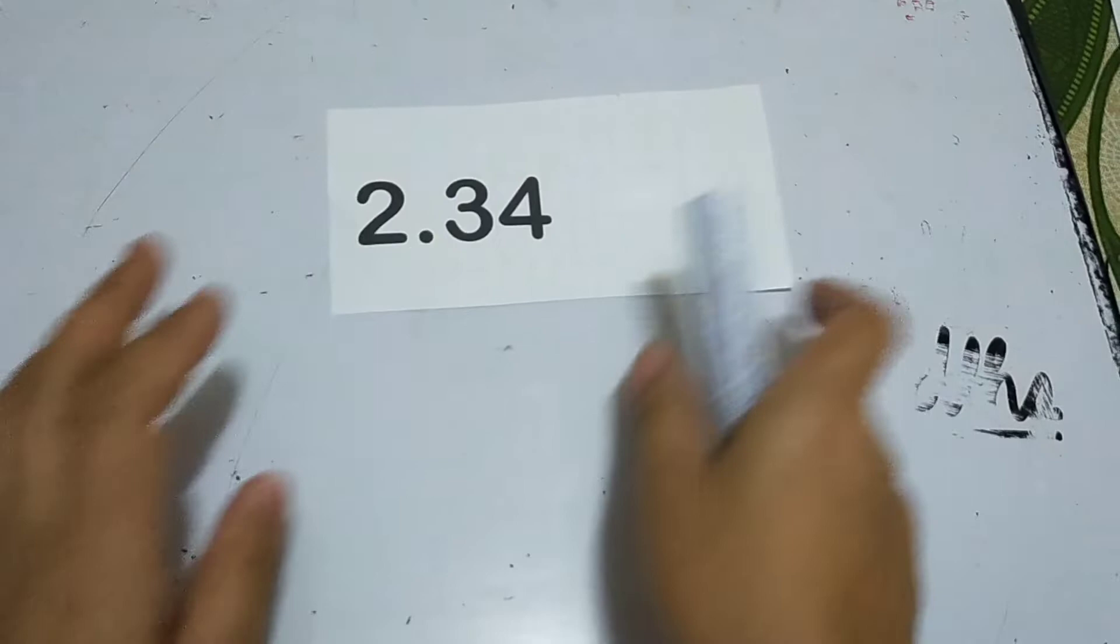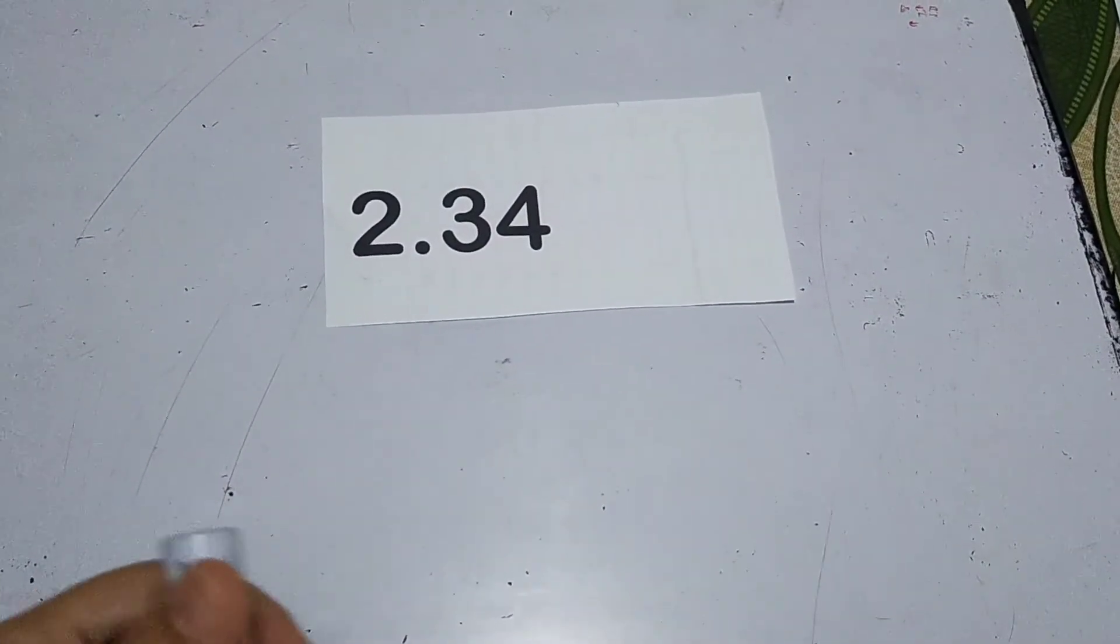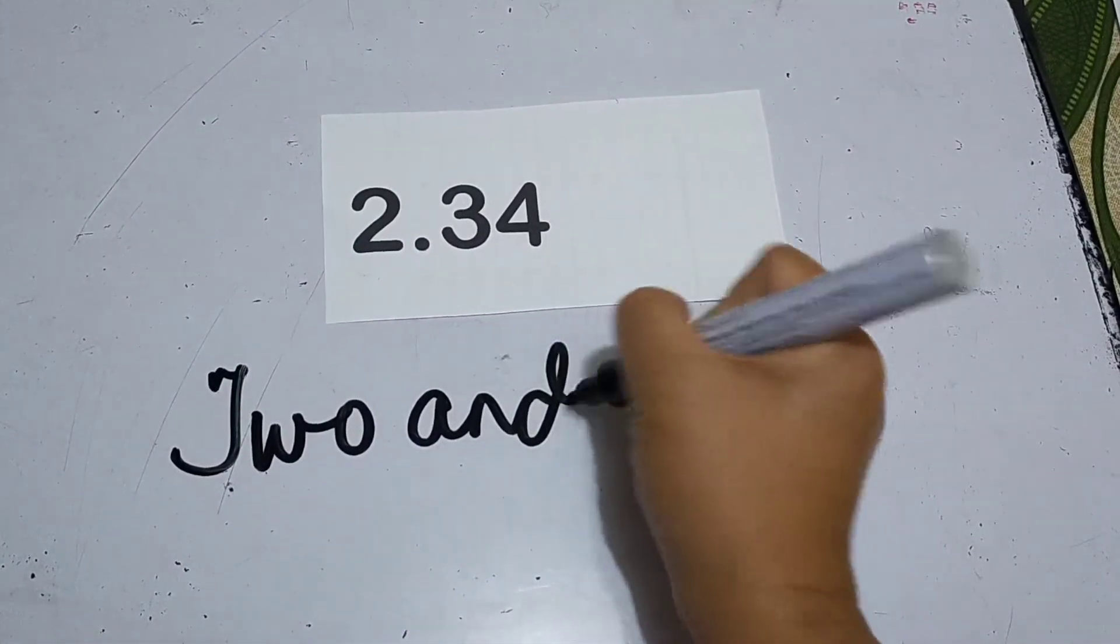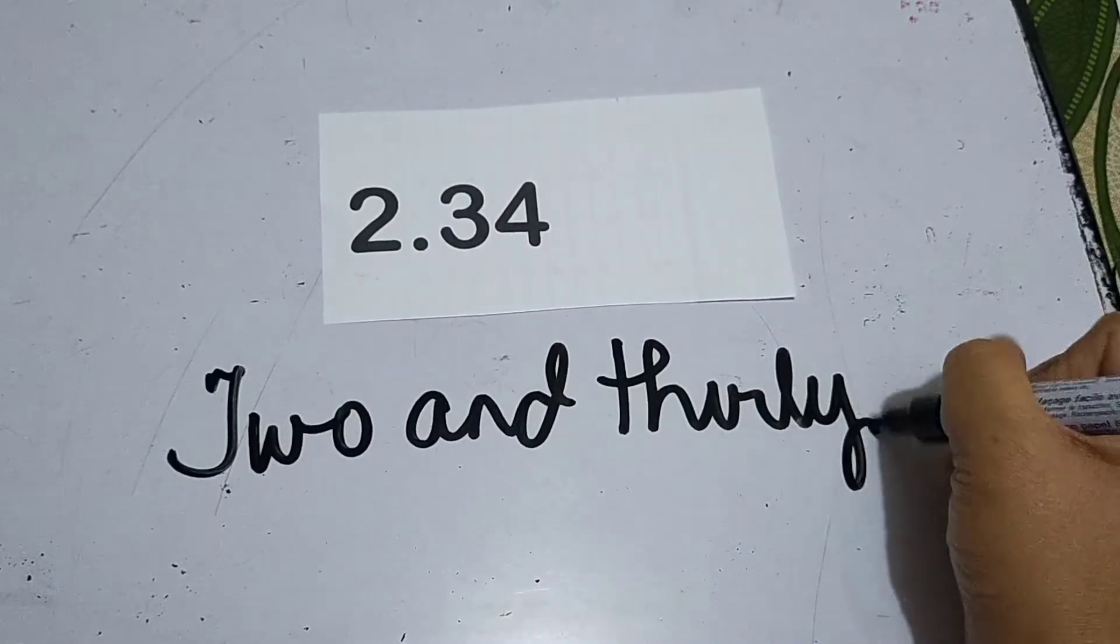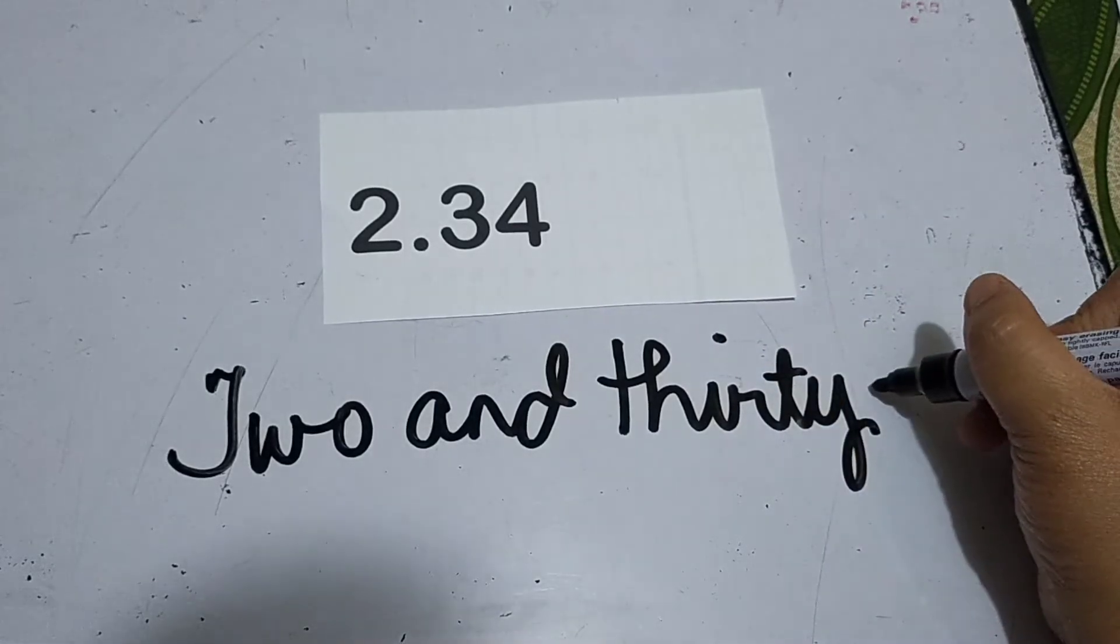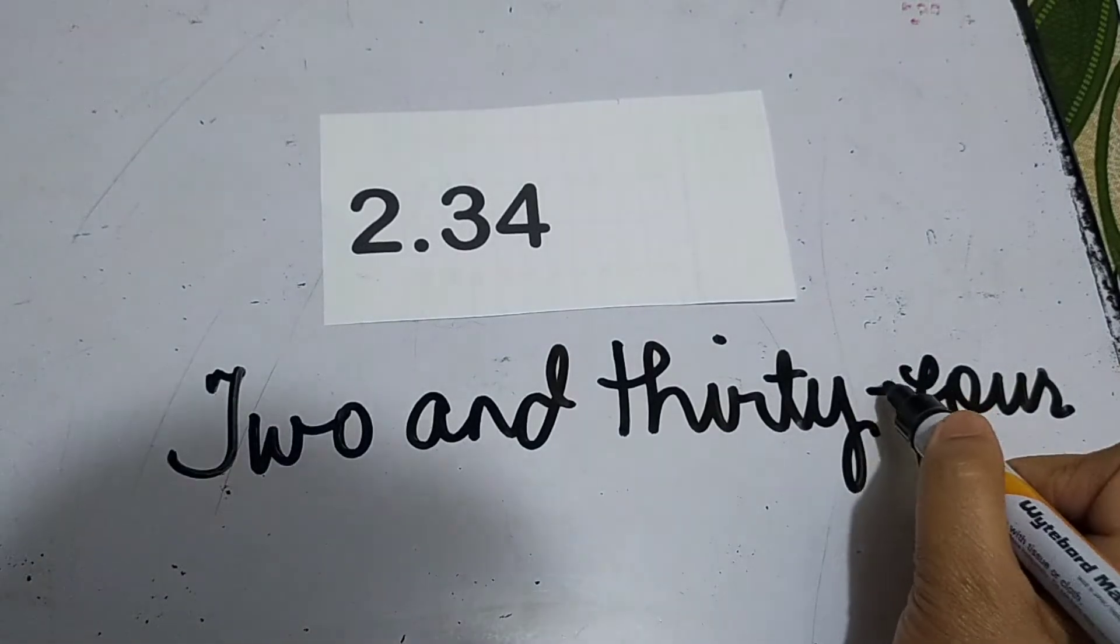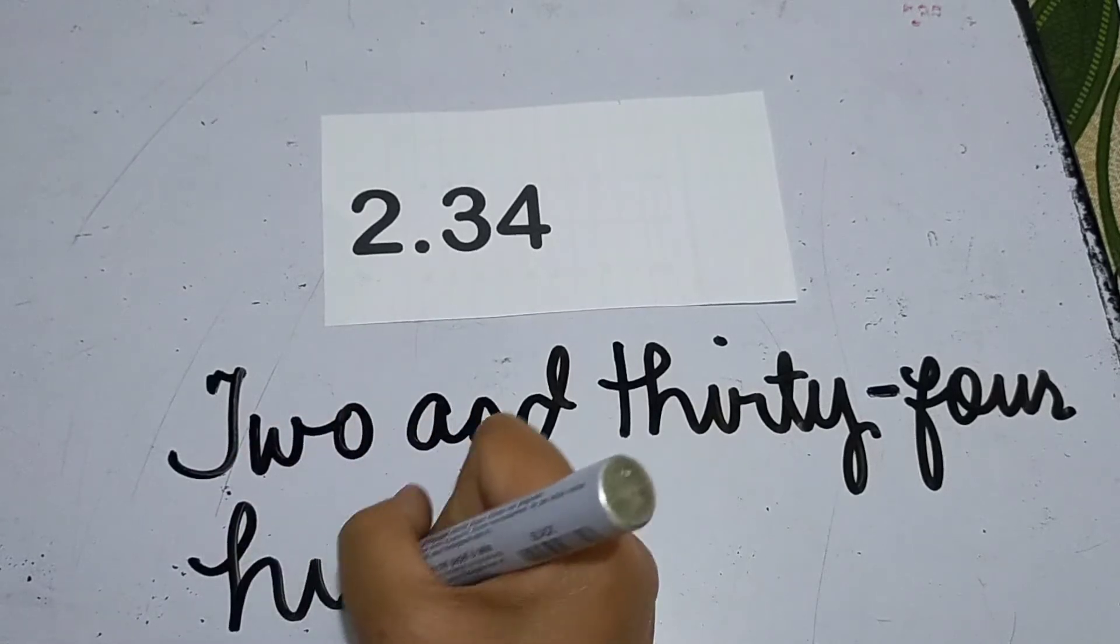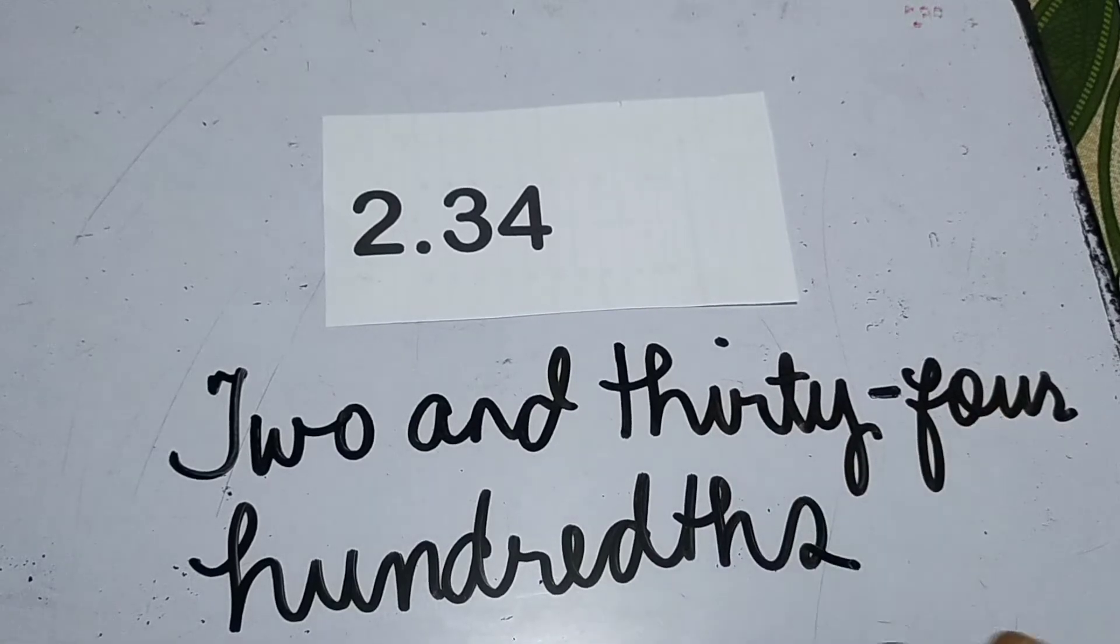Another: 2 and 34 hundredths. 2 and, so our 'and' is the decimal point. Two and thirty-four hundredths. As you can see, there's a dash here, right? 34 hundredths.